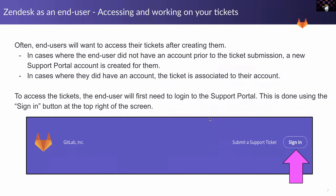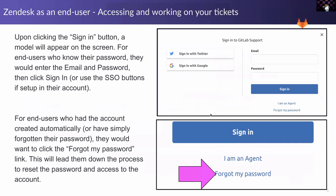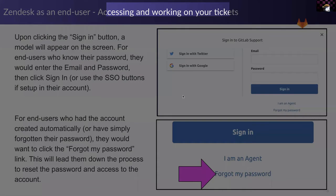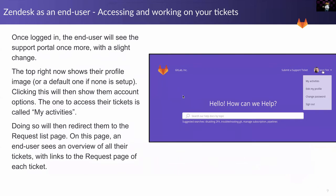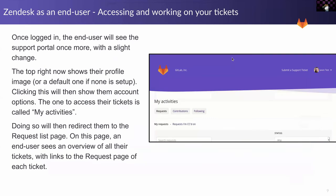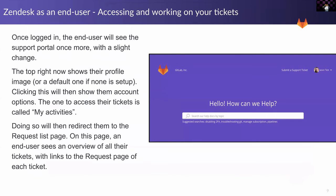To access and see your tickets, go to the Sign In button and log in. Here's some basic information about how to sign in, and you can click the Forgot Password link if needed. Once you've actually logged in, click your name in the top right and click Activities — that will take you to the My Activities or ticket list page.